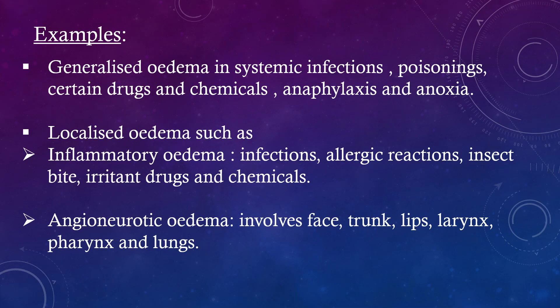Examples. Generalized edema: systemic infections, poisoning, certain drugs and chemicals, anaphylaxis, and anoxia. Localized edema: inflammatory edema, infections, allergic reactions, insect bites, and irritant drugs and chemicals. Angioneurotic edema — it involves the face, trunk, lips, larynx, pharynx, and lungs.